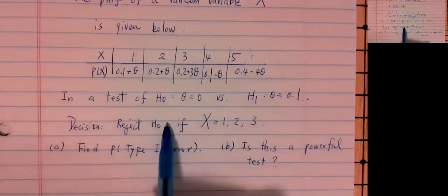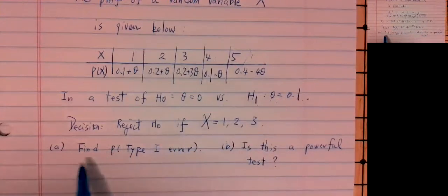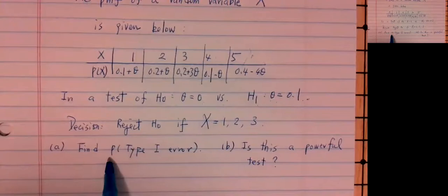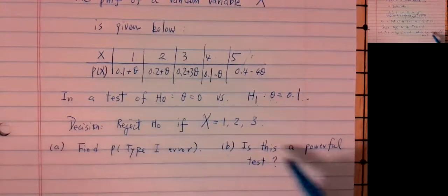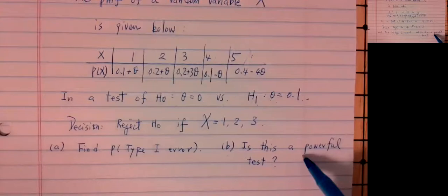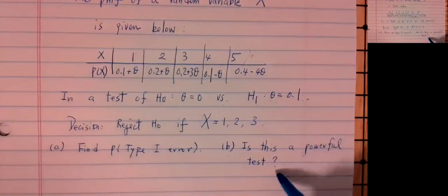For the given information, we want to find: first, what's the probability of making a type 1 error, and second, is this a powerful test? Two questions.